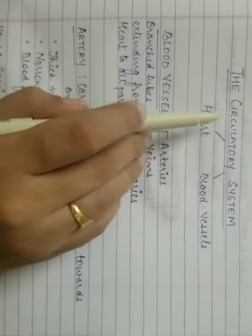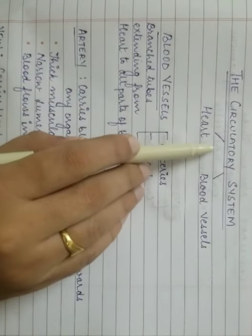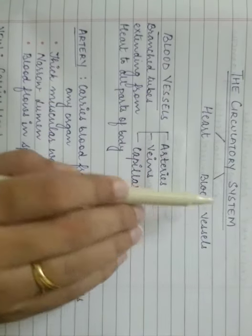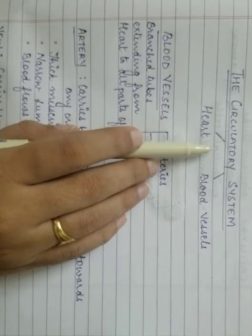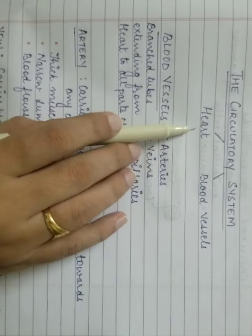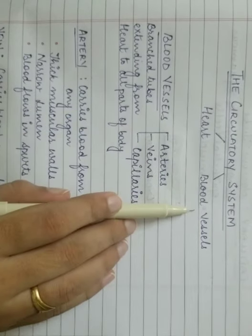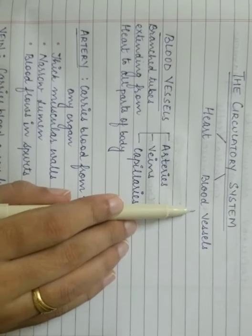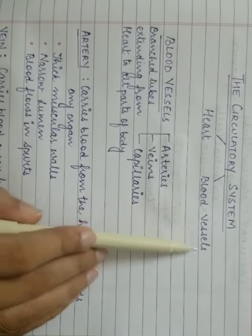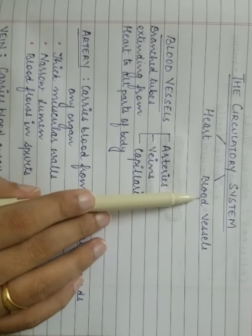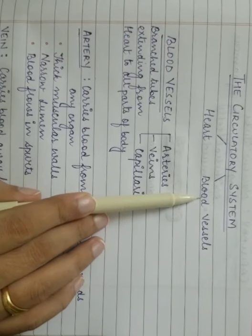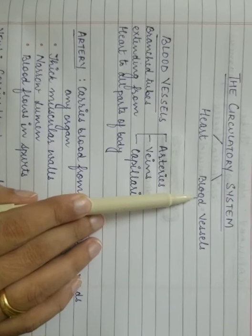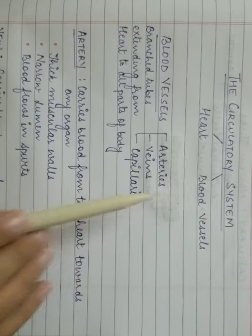Good morning everyone. Today we will be studying about the circulatory system. The circulatory system consists of the heart and the blood vessels. First of all, we will be discussing about the blood vessels — the types of blood vessels which are present in the circulatory system.